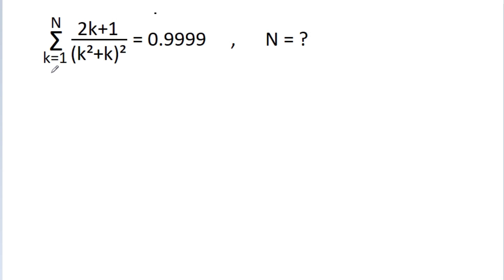In this video, we have given that sigma k equals 1 to n of (2k+1) divided by (k²+k)² is equal to 0.9999, and we have to find the value of n.